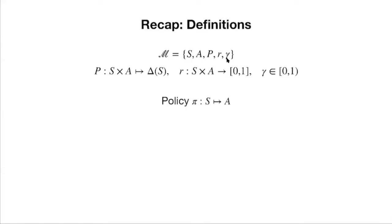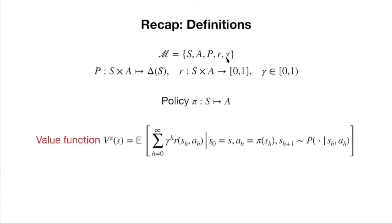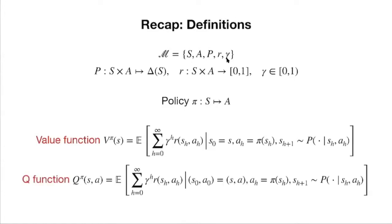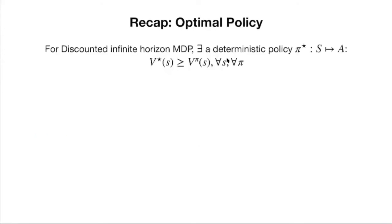We're talking about policy. In a discrete setting, we have A to the S many different policies. For each policy, we can define two important quantities: the value function and the Q function. These two functions capture the long-term effect of a particular policy starting from a particular state. We talked about the optimal policy — the theorem says that for any discounted infinite horizon MDP, there always exists a deterministic policy pi-star mapping states to actions that dominates any other policy at any state in terms of value function.